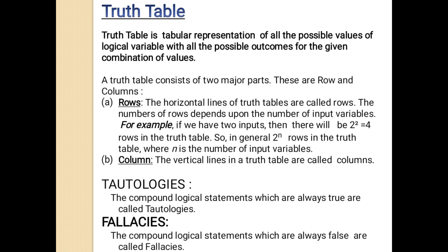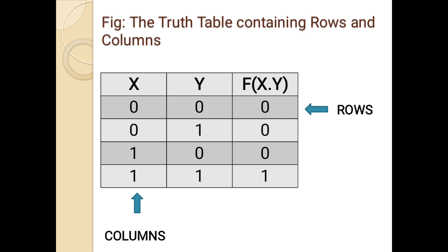Tautologies — the compound logical statements which are always true are called tautologies. It means when the result of the truth table is always 1, then it is known as tautologies. Fallacies — the compound logical statements which are always false are called fallacies. It means when the result of the truth table is always 0, then it is known as fallacies.